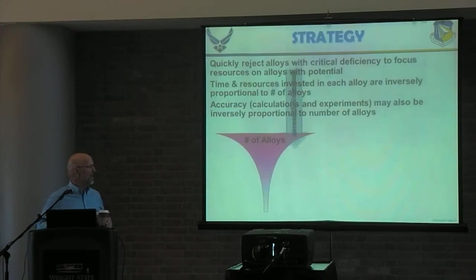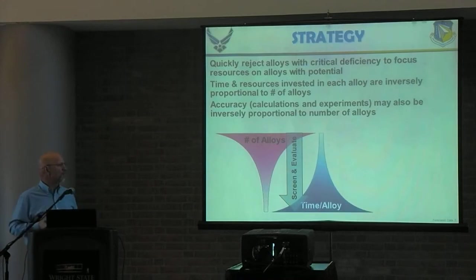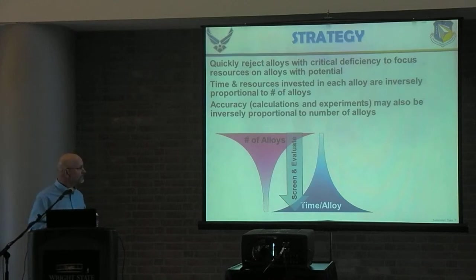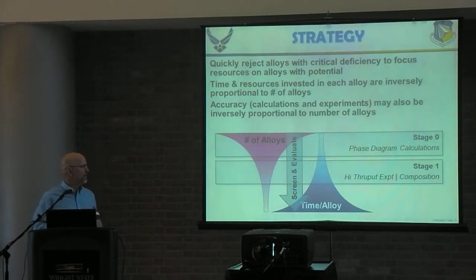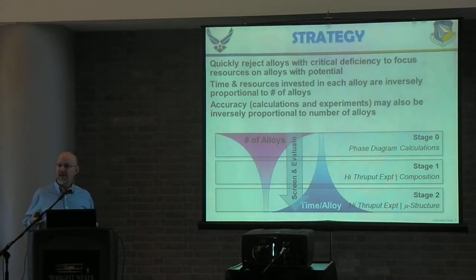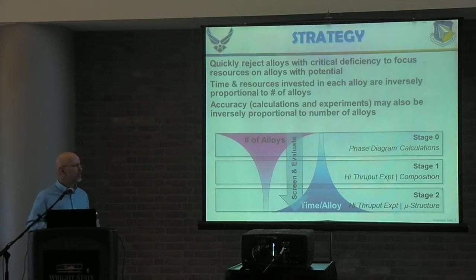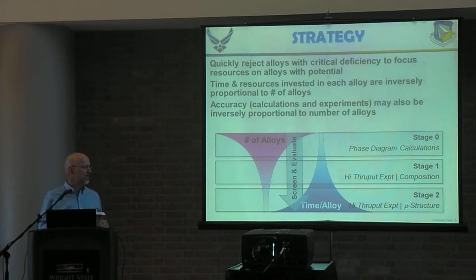We've set up a three-tier process where we start with phase diagram calculations, follow that with high-throughput experiments where composition is the primary variable — for those familiar with materials libraries, this would be an approach you might recognize — and then in the third stage, high-throughput experiments where microstructure is the primary variable. I won't talk about that here.